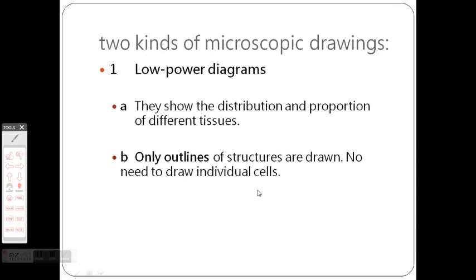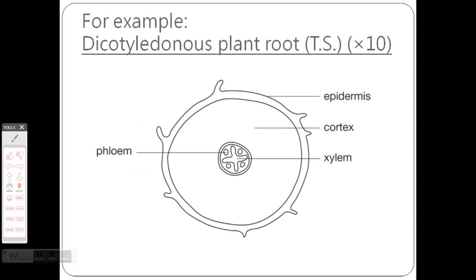There are two kinds of microscopic drawings. The first one is low power diagrams. For low power diagrams, you just need to show the tissues, the structures, and only outlines of the structures are drawn. You don't need to draw any cells because it is low power. You may not even be able to see the cells.